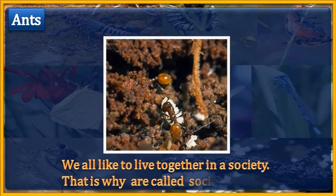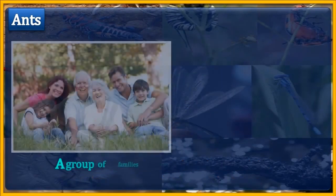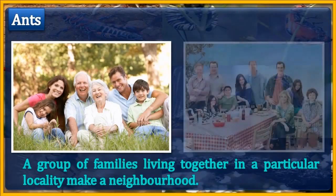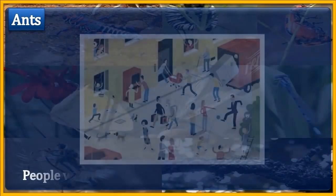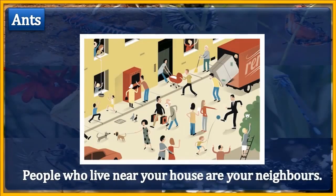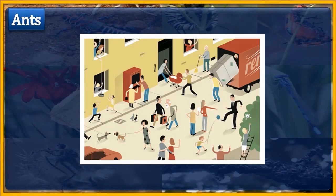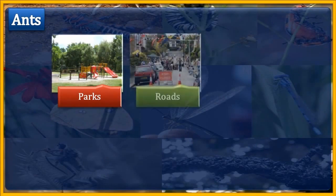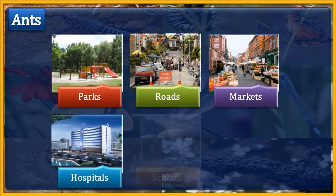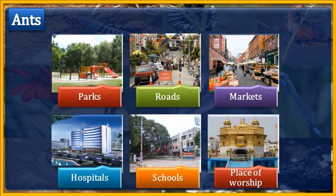We all like to live together in a society — that is why we are called social beings. A group of families living together in a particular locality makes a neighborhood. People who live near your house are your neighbors. People of a neighborhood share some common facilities like parks, roads, markets, hospitals, schools, and places of worship.